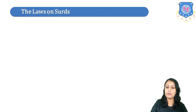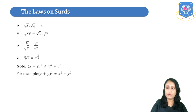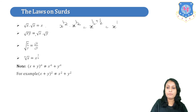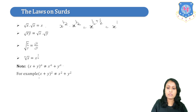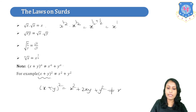Now let's study some laws on surds. First: √x · √x = x, because x^(1/2) · x^(1/2) gives x raised to 1. Similarly, √(xy) = √x · √y using the laws of indices. Also, √(x/y) = √x / √y. And the nth root of x gives x raised to 1/n. Keep in mind that (x+y) raised to a cannot equal x raised to a plus y raised to a, because for example (x+y) squared equals x² + 2xy + y², not just x² + y². So you cannot split in terms of addition.